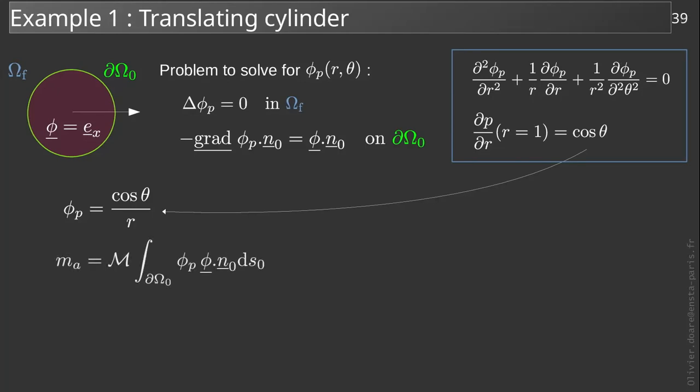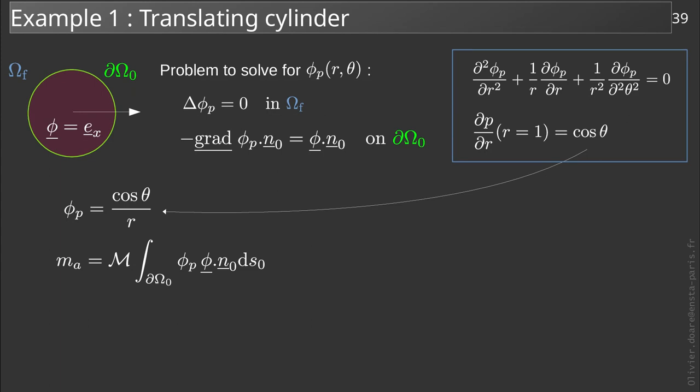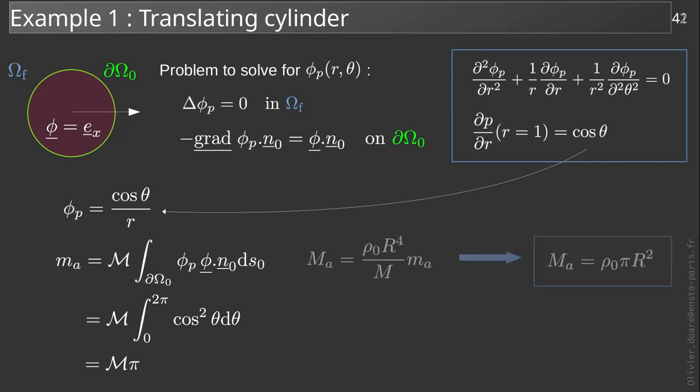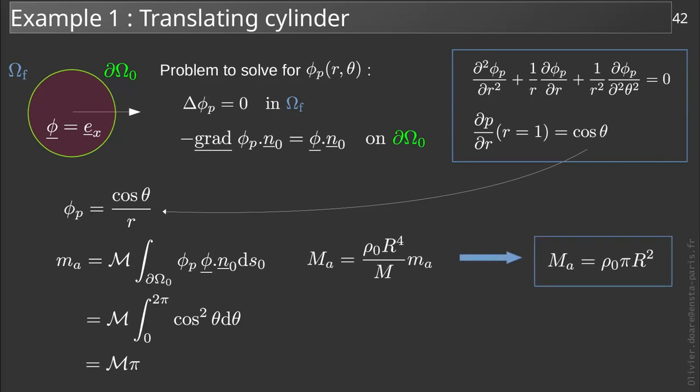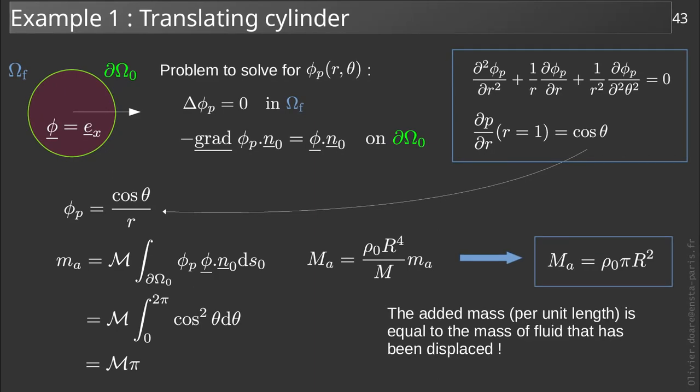It remains to introduce this in the expression of the added mass. The surface integral becomes in this two-dimensional case a contour integral on a circle whose radius equals 1. It takes a very simple form. We finally find m times pi for the dimensionless added mass. Going back to dimensional quantities, we find an added mass equal to rho_0 times pi r squared. That is, an added mass equal to the mass of the fluid contained in a solid volume.